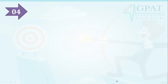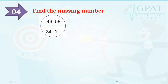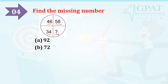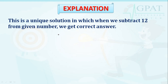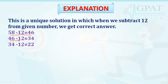Question number four: find the missing number. There are three digits and one is a question mark. The sequence is 46, 58, 34 — so what will the question mark be? Options are 92, 72, 22, or 68. The right option is 22. The explanation: when we subtract 12 from each given number we get the correct answer. 58 minus 12 equals 46; 46 minus 12 equals 34; and 34 minus 12 equals 22. So the right option is 22.